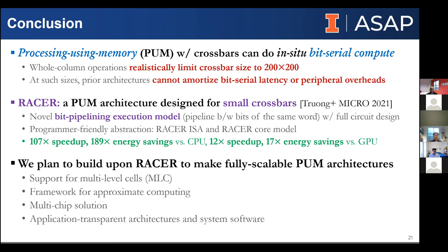To summarize: we're hoping RACER is a nice starting point for scalability arguments. It's not the end-all be-all for processing-in-memory architectures, but it has nice properties we can build off of and lessons we can extrapolate to PIM architectures in general. Our hope is that with these different efforts, we can provide a much more flexible and scalable solution to processing using memory cells.